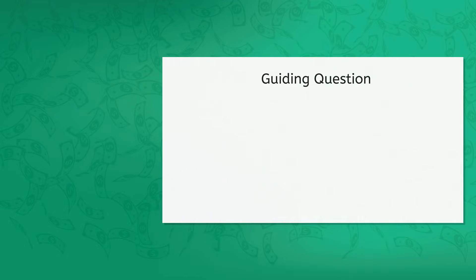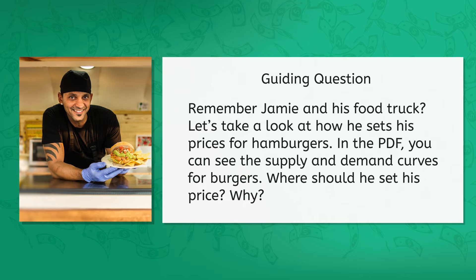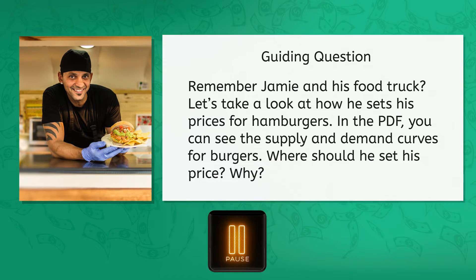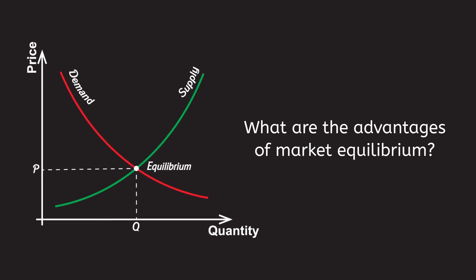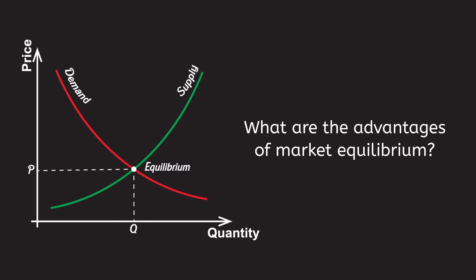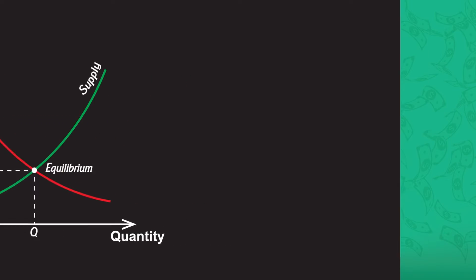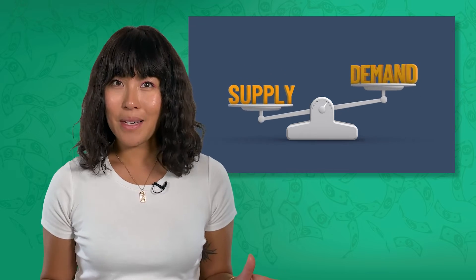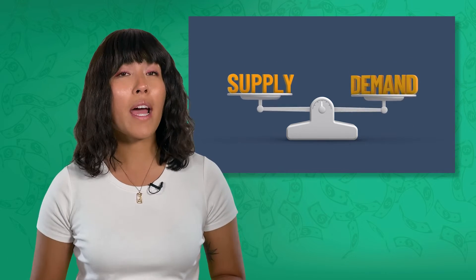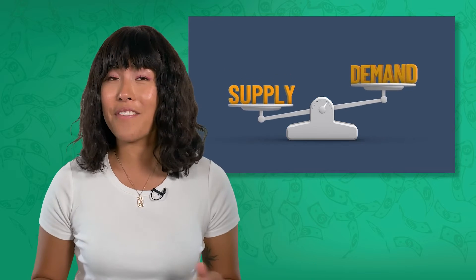Market equilibrium is the point in the market where the amount of goods demanded by consumers is equal to the amount of goods a producer is willing to sell. Let's take a moment to review — remember Jamie and his food truck? Let's take a look at how he sets his prices for hamburgers. In the PDF, you can see the supply and demand curves for burgers. It kind of just makes sense that you would want supply to equal demand, but let's dig in a bit and see why market equilibrium has so many advantages.